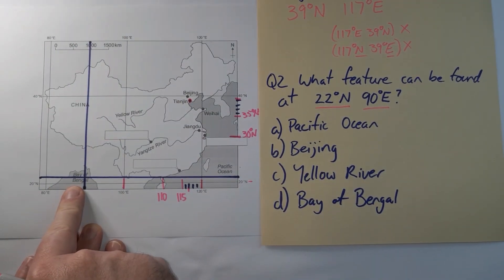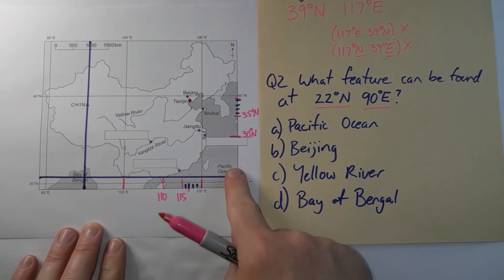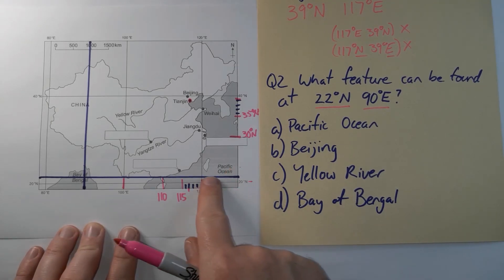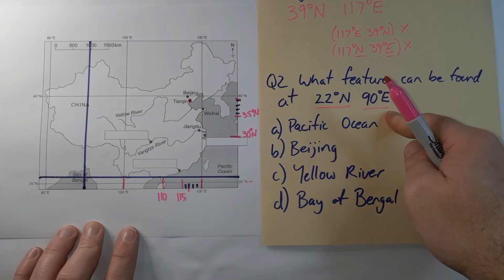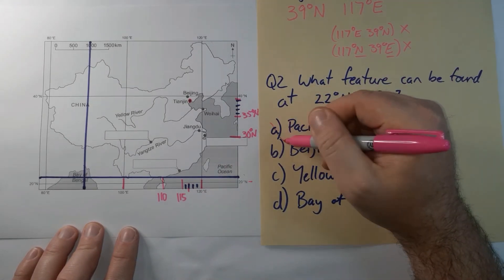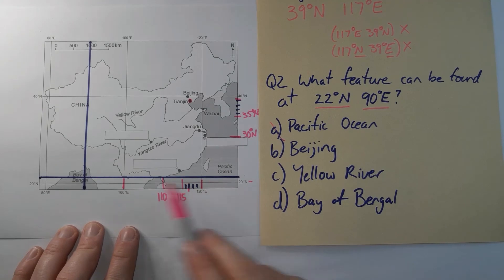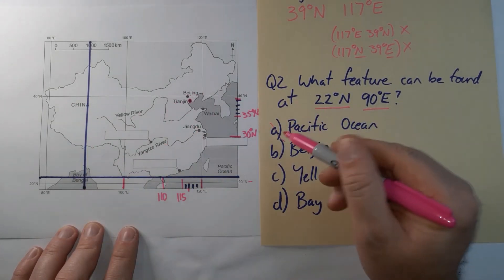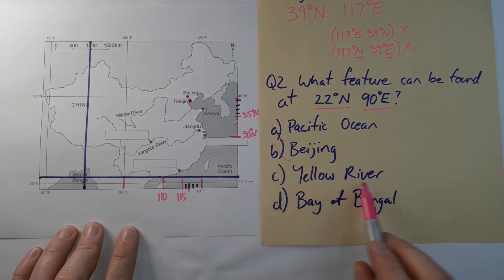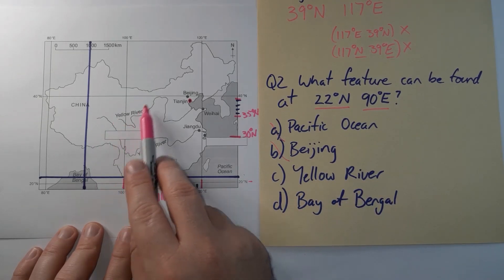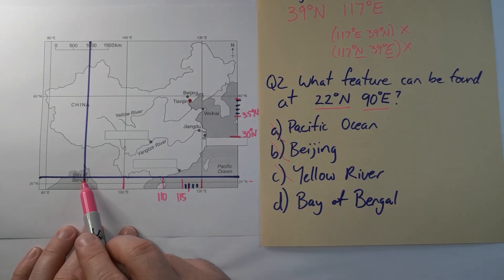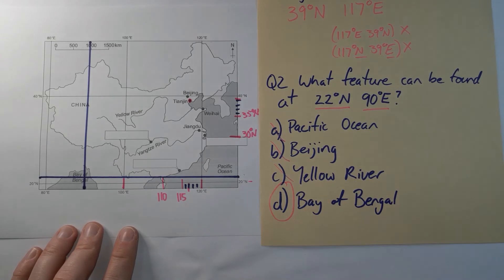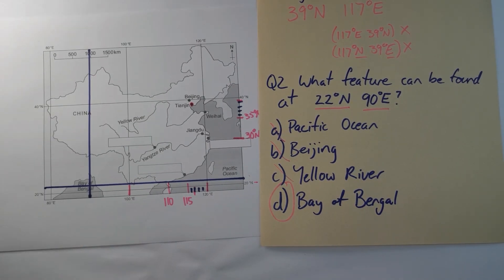I can see where my latitude and my longitude intersect. I actually meet up at the Bay of Bengal. So I'm not over here in the Pacific Ocean which was still at 22 degrees but it didn't have the right longitude of 90 degrees east. So I'm going to cross that one out. Beijing is nowhere near either of these lines. Here's Beijing so I'm going to cross that out. And the Yellow River, well this is the Yellow River here again nowhere near those lines. And we've said that if I connect those two lines we end up at the Bay of Bengal. That's it.